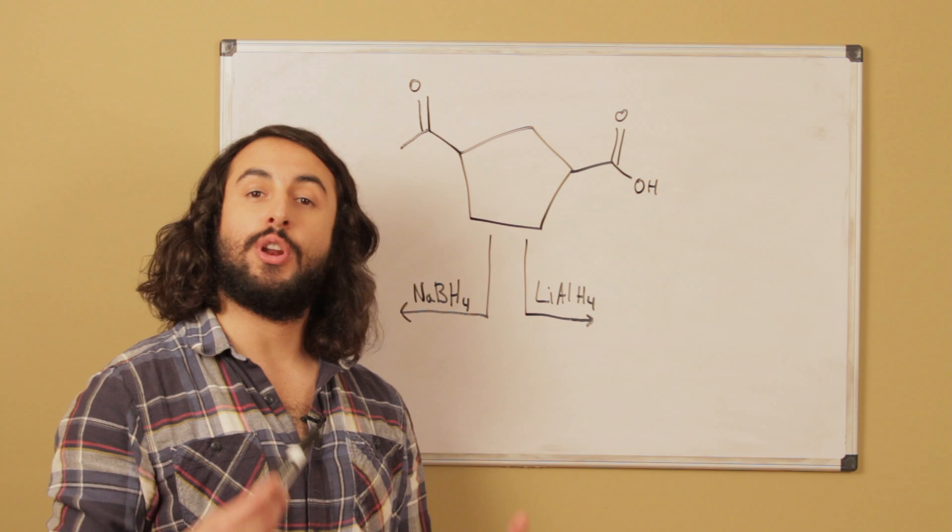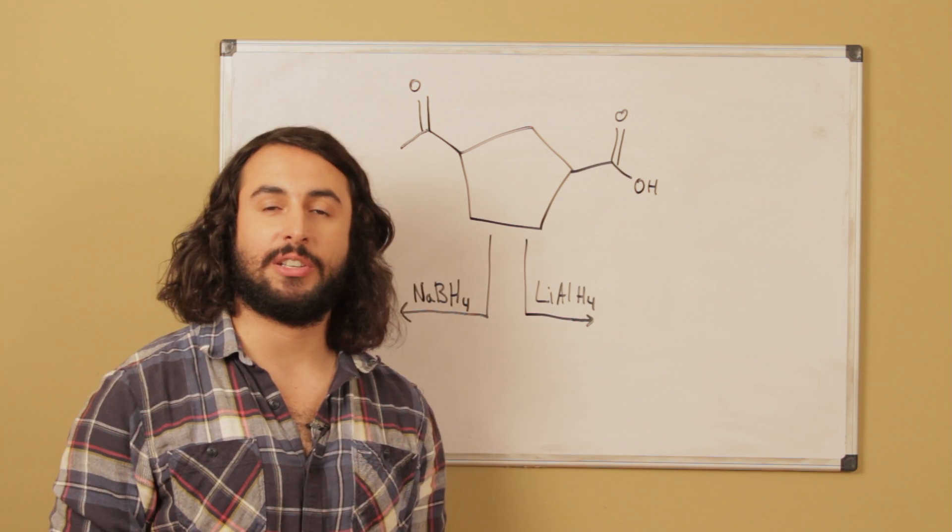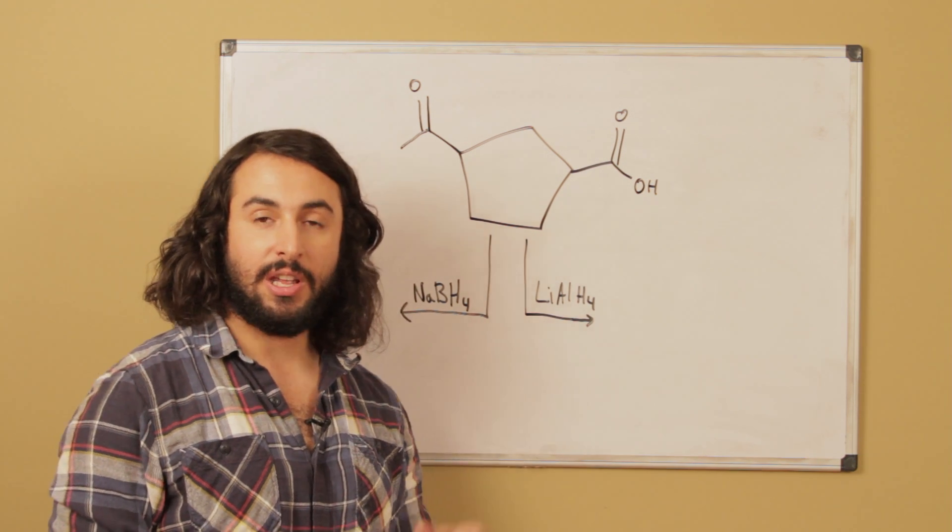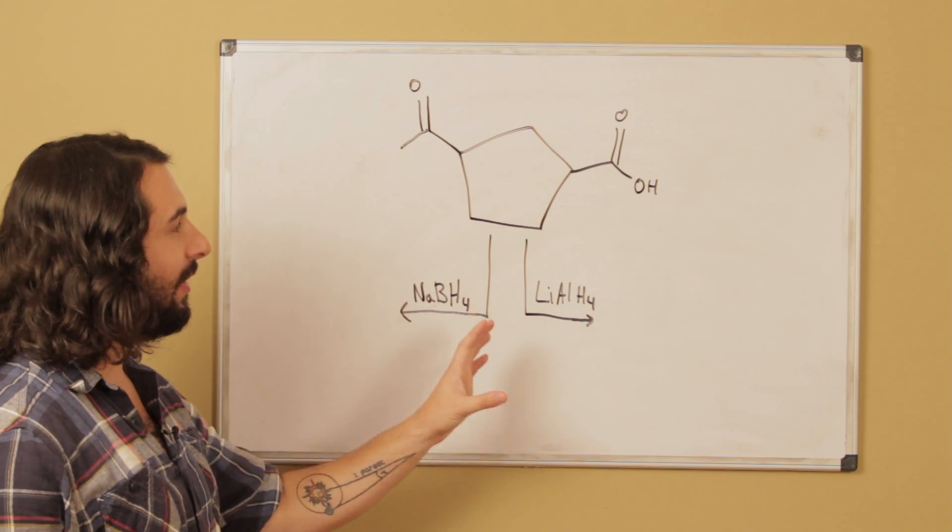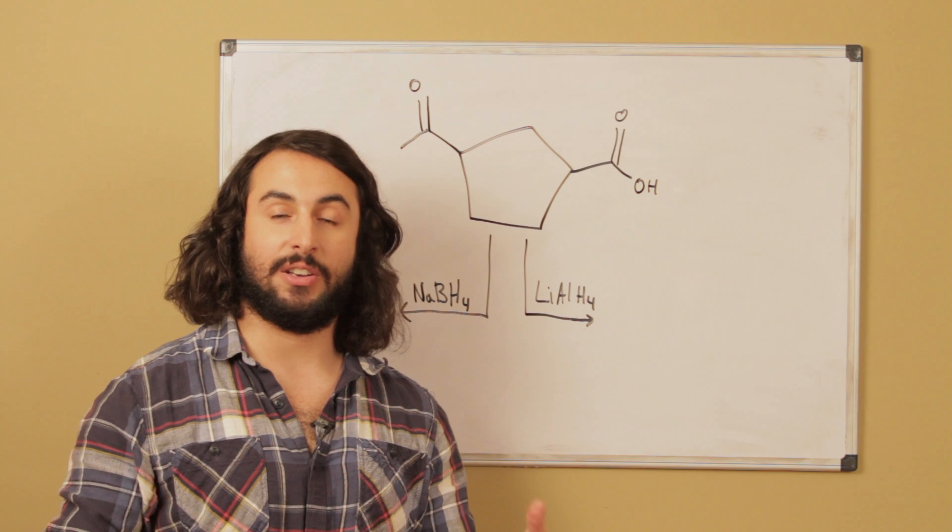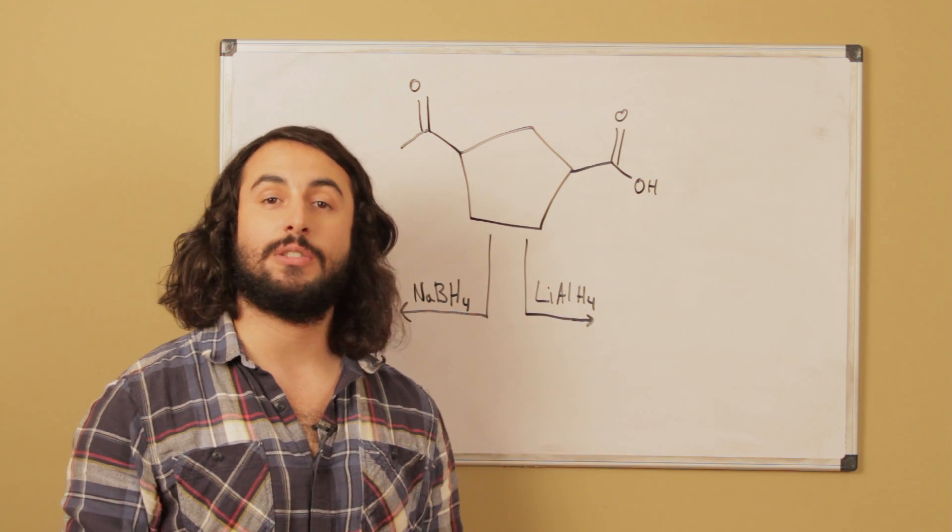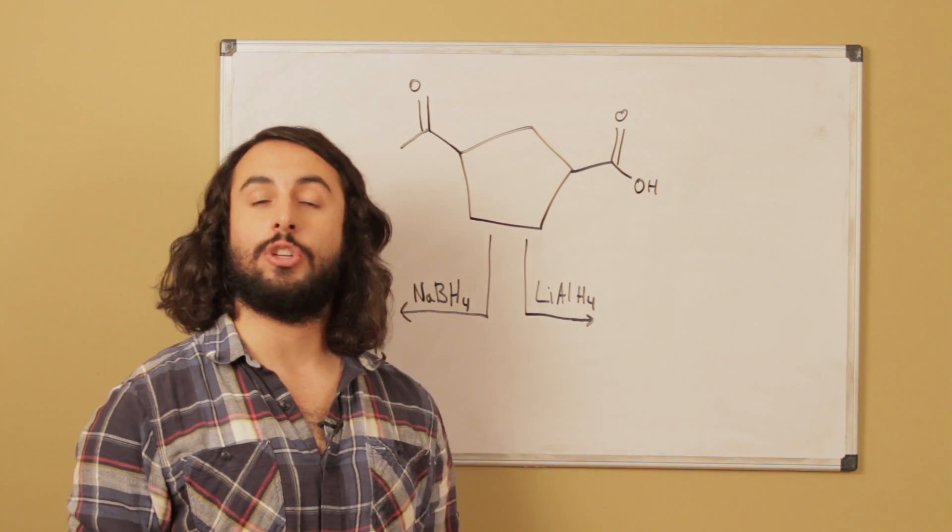So if you don't remember what these do, go ahead and check out my lecture on oxidation and reduction in the organic chemistry playlist. These are going to generate two different products based on the reducing capacity of these two reducing agents, so go ahead and see if you can draw the correct product for these two transformations.